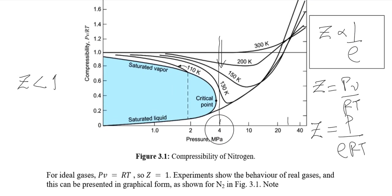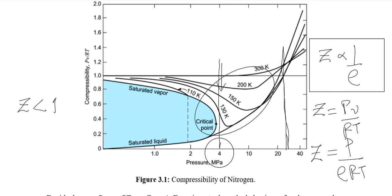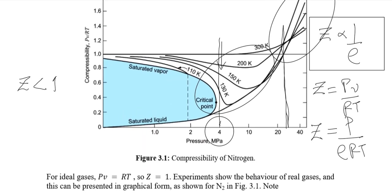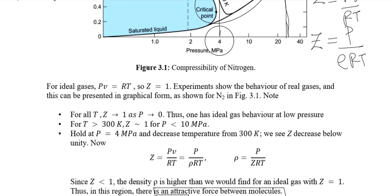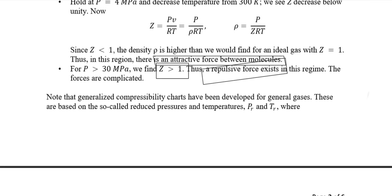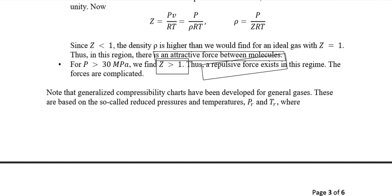Now, if pressure is above 30 MPa, for all temperature lines Z becomes greater than 1. This means there are repulsive forces between particles. When the gases are repelling each other under high applied pressure, the change in volume is less than expected — so there is a difference between the ideal P-V relationship. This is the generalized compressibility chart developed for generalized gases.